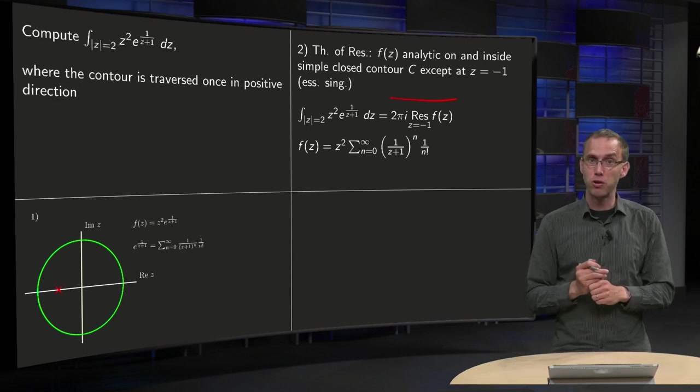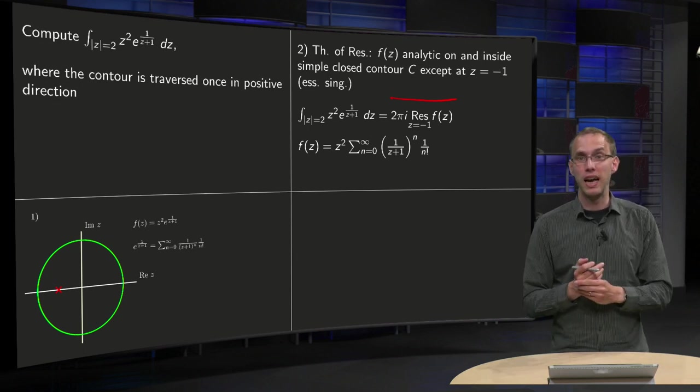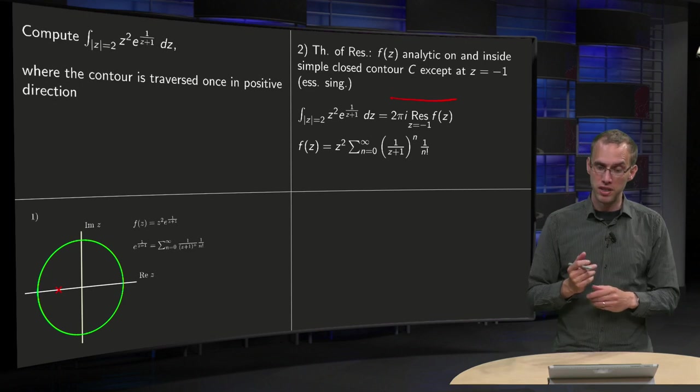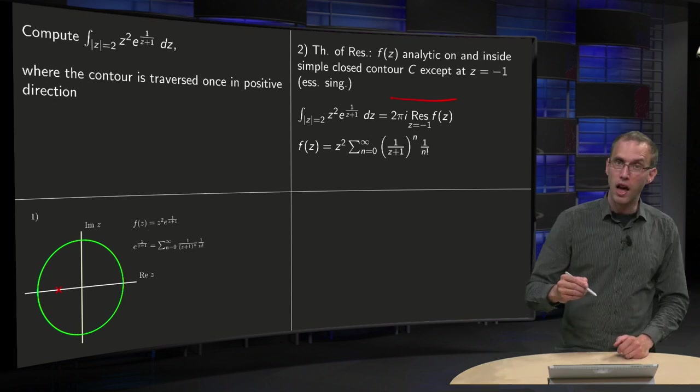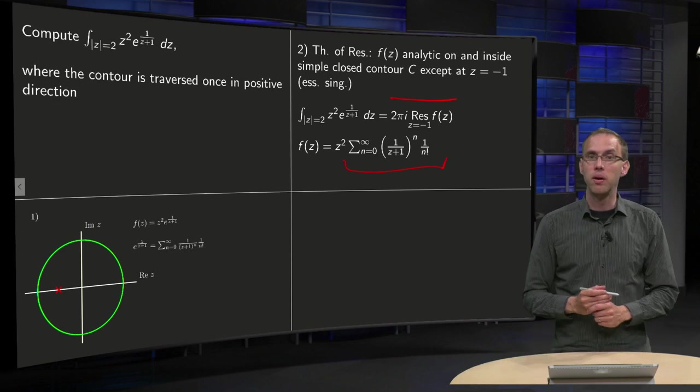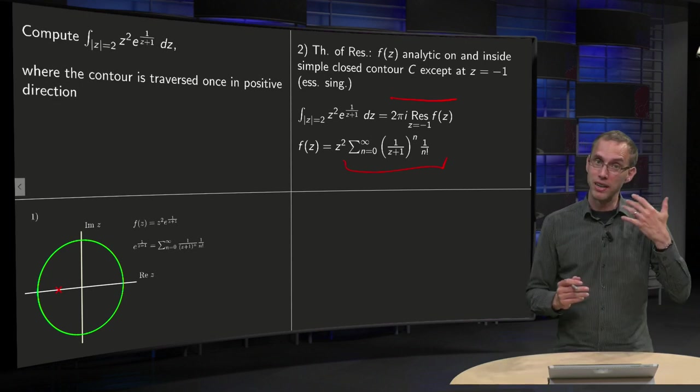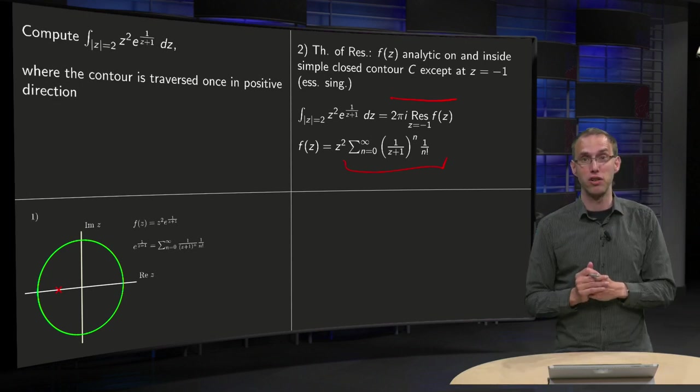Now we have to compute the residue at z equals minus 1. We can expand the exponent of course like this, but then question, do we have already the correct Laurent series over here?